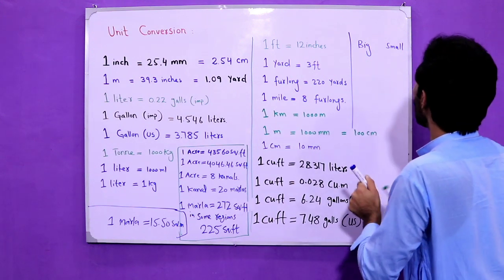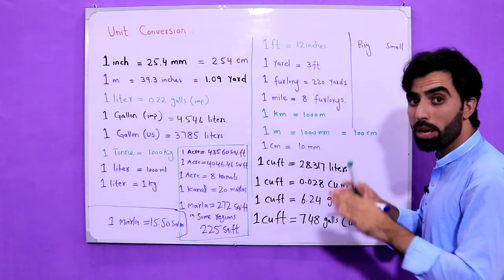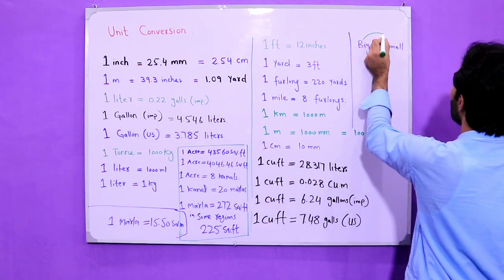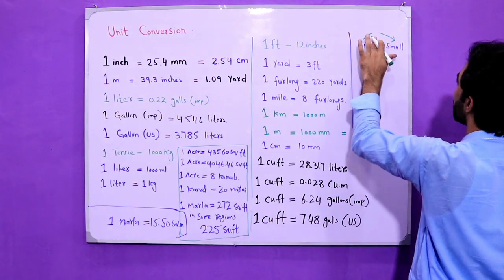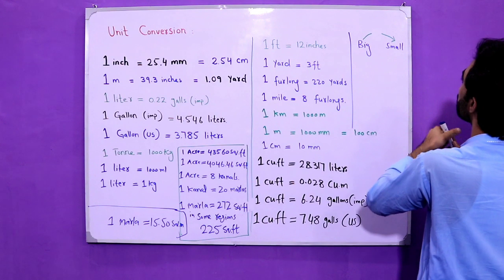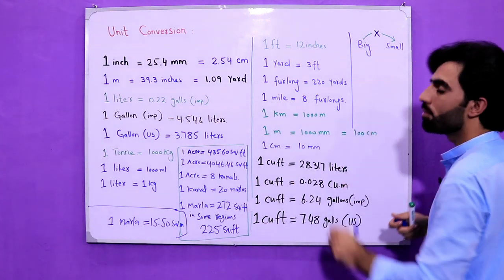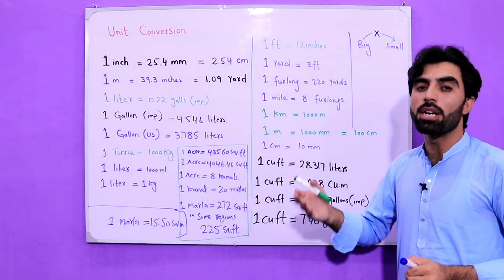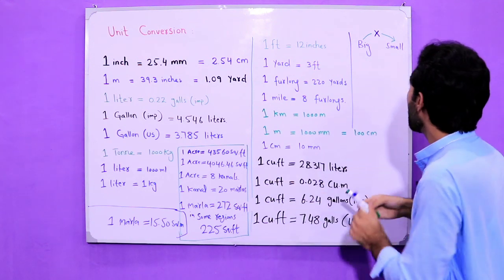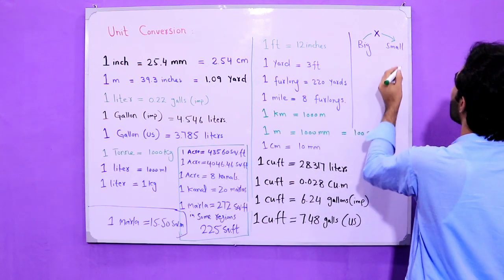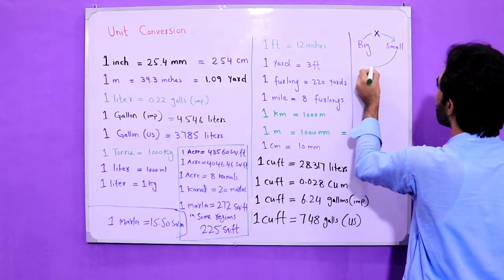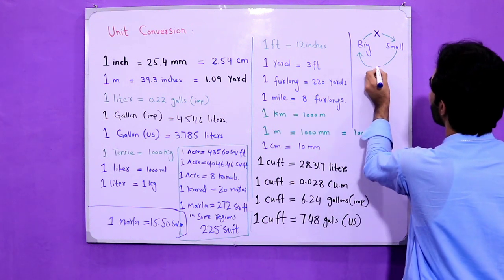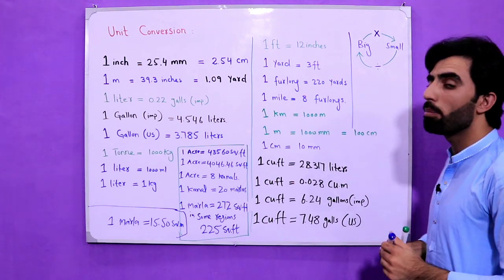If you want to go from big to small, then you will multiply. From big to small, we will do multiplication. For example, from centimeters to millimeters, you will multiply. From small to big, you will divide. This is the method by which you can do unit conversion.